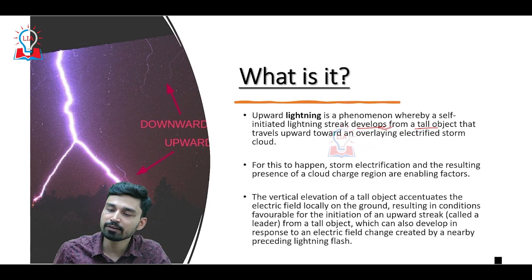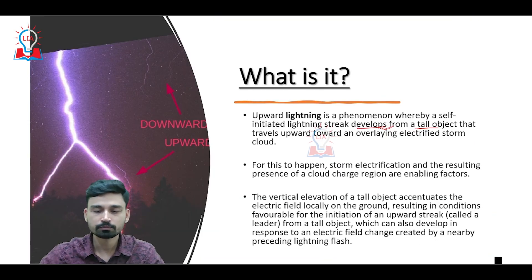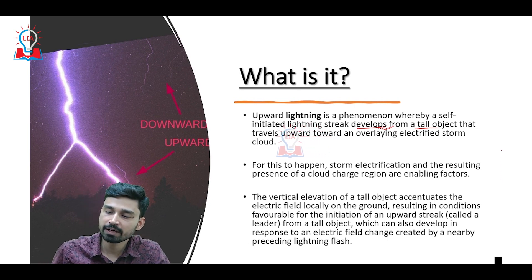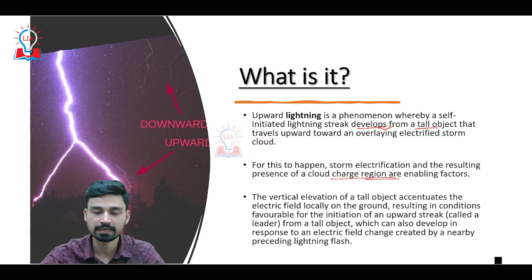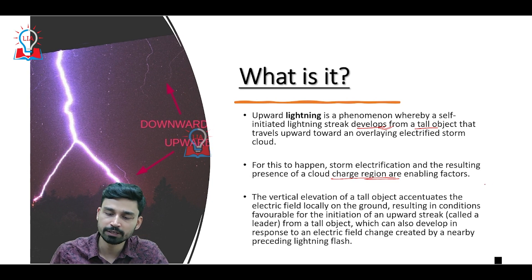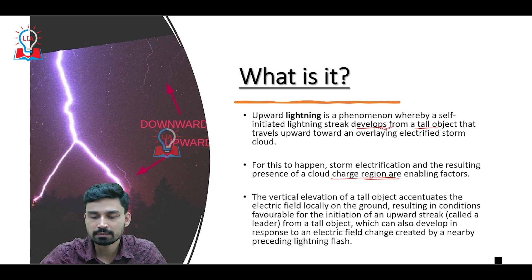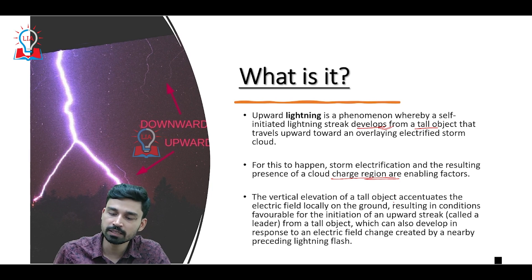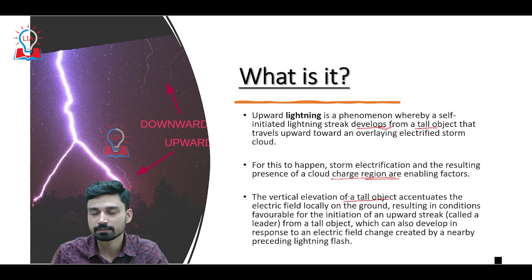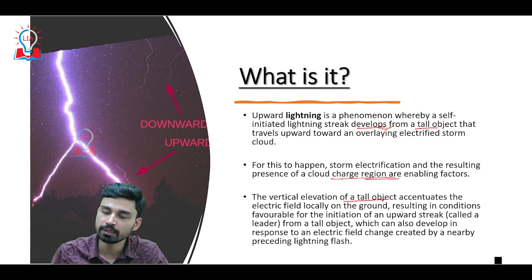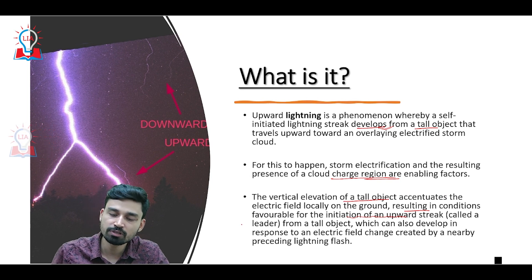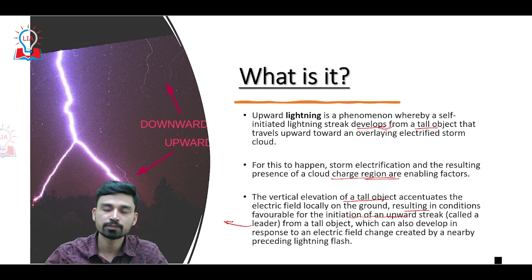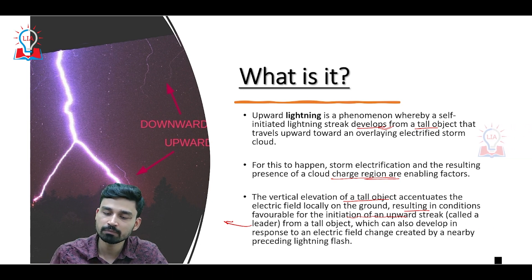For upward lightning to happen, storm electrification and the resulting presence of cloud charge regions are the enabling factors. The vertical elevation of the tall object accentuates the electric field locally at the ground, resulting in conditions favorable for the initiation of an upward streak. In climatological terms, this upward streak is called a leader from the tall object, and it can also develop in response to an electric field change created by a nearby preceding lightning flash.